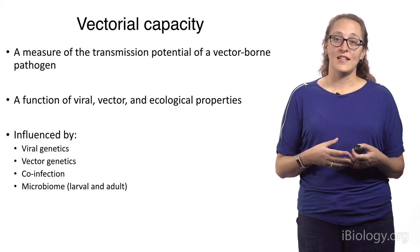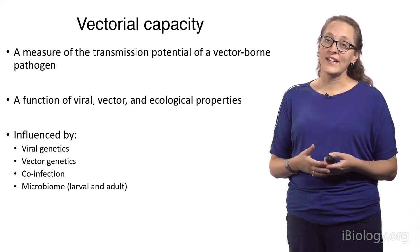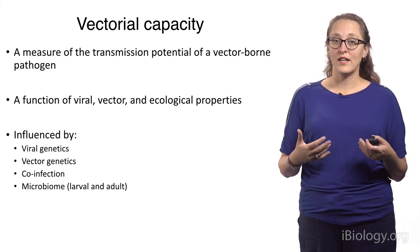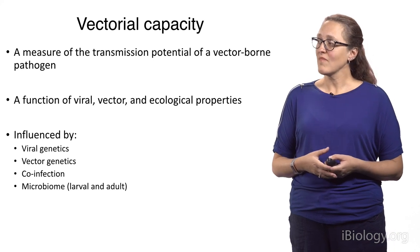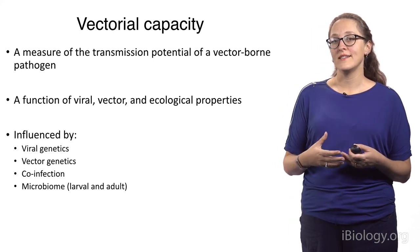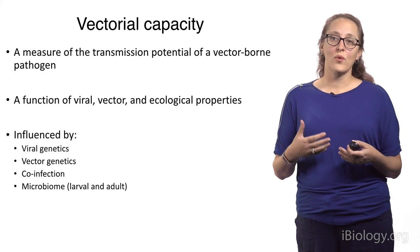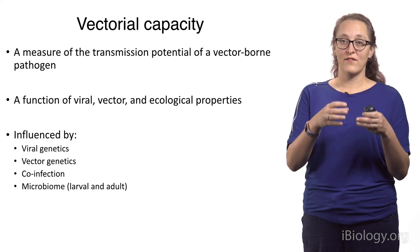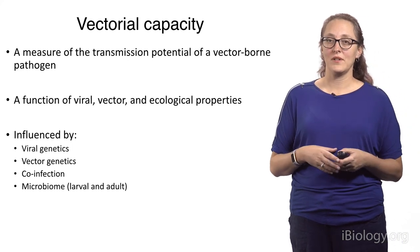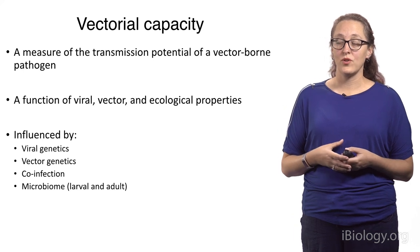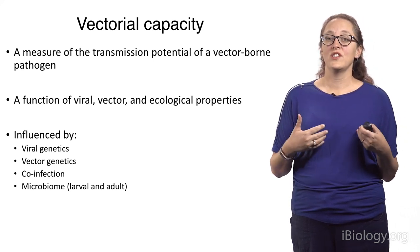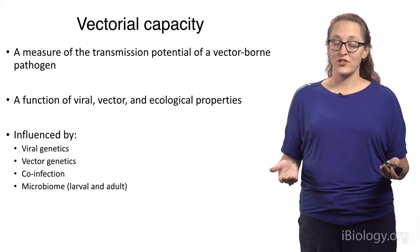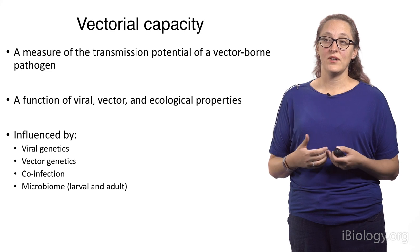Vectorial capacity is influenced by any number of things, including viral genetics, vector genetics, co-infection, and even the microbiome or larval and adult habitats. Vectorial capacity is generally thought about as the number of subsequent bites that infect people, given that we introduce a single infected mosquito into a naive population. In this way, it's somewhat analogous to the basic reproductive number, which is an epidemiological parameter we use to describe the transmissibility of a pathogen into a naive population.